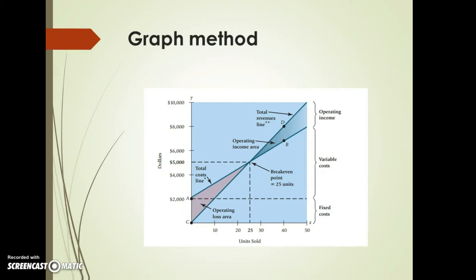Before you start to design a graph, you need to know variable cost, fixed cost, selling price, and the number of units sold. You then create a total cost line based on variable and fixed costs. Next, you create a total revenues line based on the selling price and number of units sold. The intersection of these two lines is called the breakeven point — the point where the difference between cost and revenues is equal to zero.